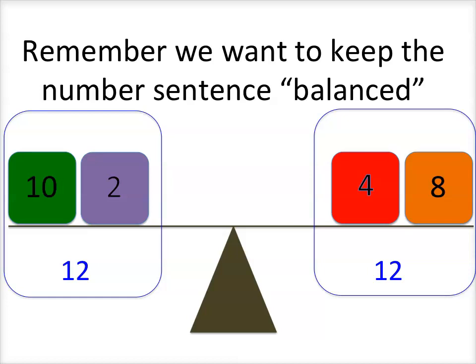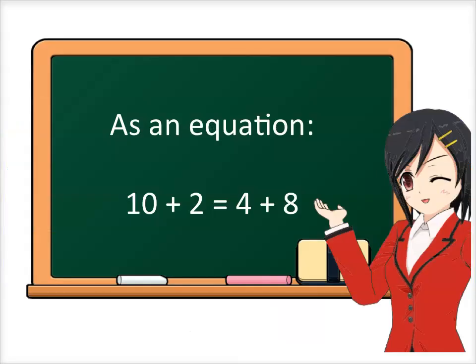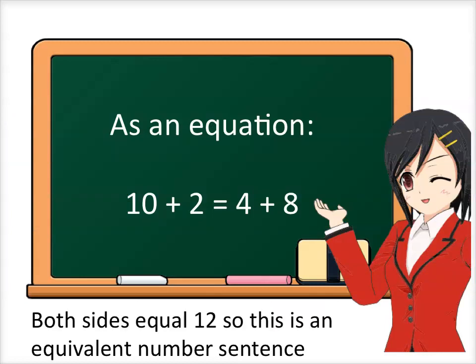Let's look at how we write this as a number sentence: ten plus two equals four plus eight. We can say this because both sides are equal to twelve.